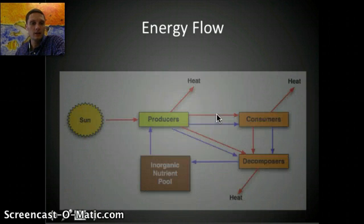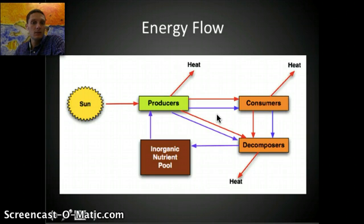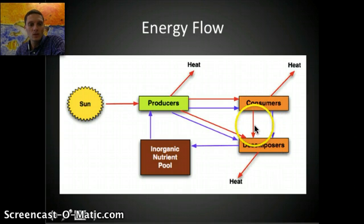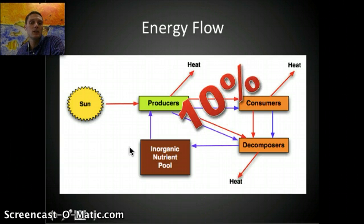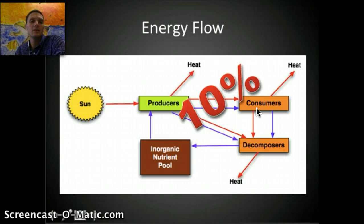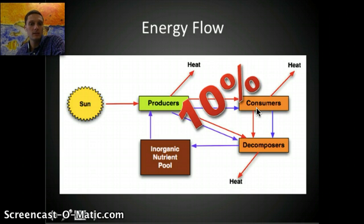The sun provides energy to producers, and producers and consumers lose some of that energy as heat. Consumers consume producers, energy is transferred, and when they die, decomposers also lose some energy as heat. Inorganic nutrients like phosphorus, nitrogen, and carbon get recycled back into the ecosystem. Energy transfer is never 100% efficient — only about 10% of the energy gets transferred from one trophic level to the next. This is why food chains are short, as few energy transfers can be sustained.